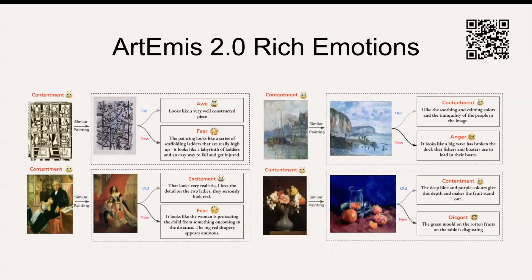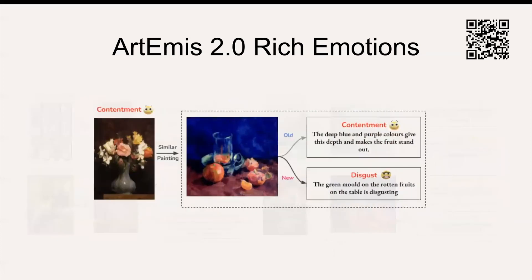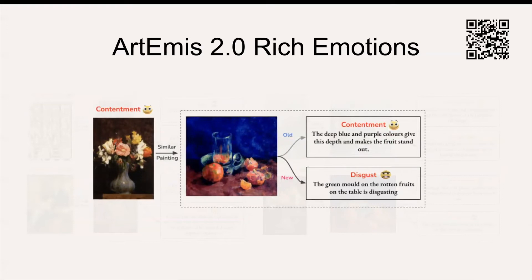Our new dataset has better representation of emotional experiences. These examples show that for visually similar paintings, we now have diverse emotions. Looking closely at this example, our collection process encourages the annotator to pay more attention and extract visual clues for opposite emotions, such as the green color being attributed to mold. You can see that negative emotional experiences, aka not being okay, is beneficial for the dataset and its ability to represent subtle emotional differences. Hence, the name of our paper, 'It's Okay to Not Be Okay.'